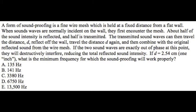The transmitted sound waves can then travel the distance d, reflect off the wall, travel the distance d again, and then combine with the original reflected sound from the wire mesh. If the two sound waves are exactly out of phase at this point, they will destructively interfere, reducing the total reflected sound intensity. If d equals 2.54 centimeters, or an inch, what is the minimum frequency for which the soundproofing will work properly?